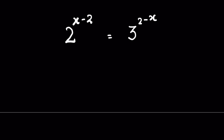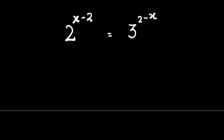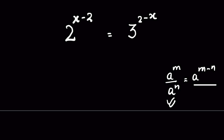2 raised to the power x minus 2 is equal to 3 raised to the power 2 minus x — find the value of x. Here we can use the identity where a raised to the power m upon a raised to the power n is equal to a raised to the power m minus n. So if we have a raised to the power m minus n, we can write it in the form of a raised to the power m upon a raised to the power n.